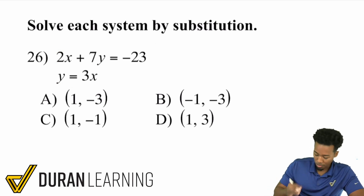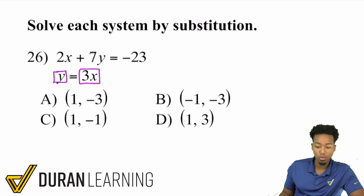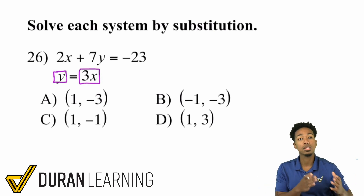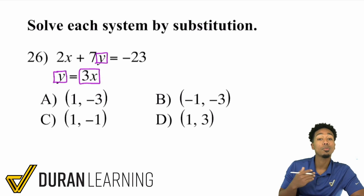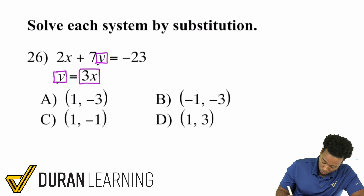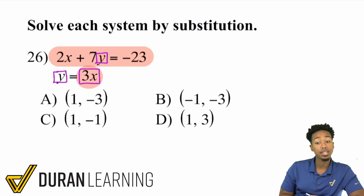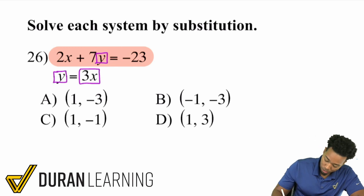Let me show you how. Remember, what we're saying is Y equals 3X. With a system of equations, the variables represent the same values. So if you have a Y in one equation and a Y in the other, those Y's are the same. What I'm able to do is rewrite the entire first equation, but replace the Y with what it equals — the 3X. That way, instead of two variables in one equation, we can actually solve it.